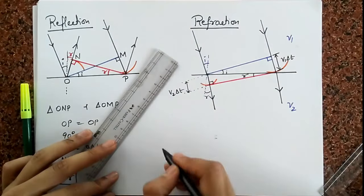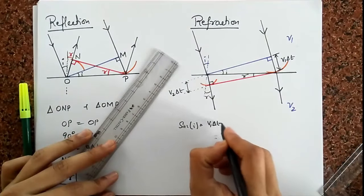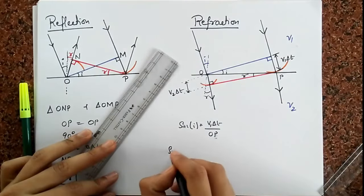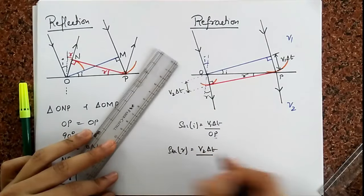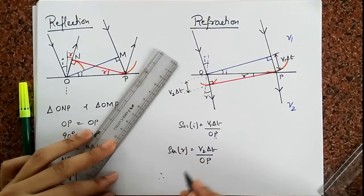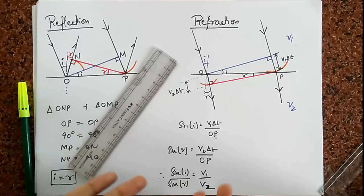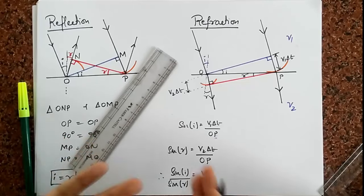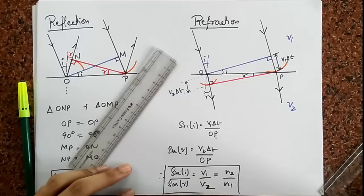And I can look at these triangles and I can ask myself, what is sine I? Sine I is going to be the opposite side which is V1 delta T divided by this side. Call it OP. And if I look at sine R, this triangle, it's going to be the opposite side, V2 delta T divided by OP. And therefore, if I divide them, the last step, we get sine I over sine R equals V1 divided by V2. And look what we have. We have Snell's law. He says, I have proved that sine I by sine R is a constant. And that constant has to be V1 over V2. And that's what Snell called N2 over N1.